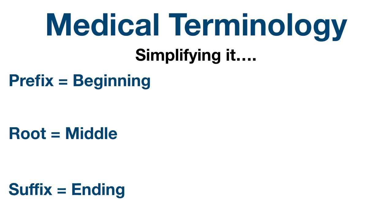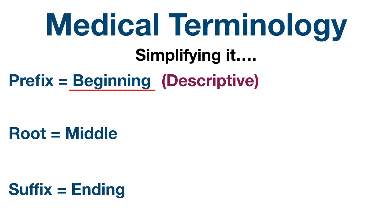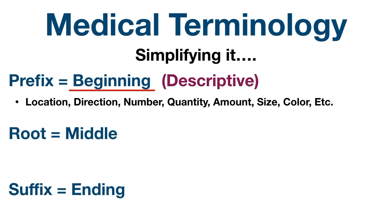The prefix is not always present, but when it is it forms the beginning of the word. The easy way to think of the prefix is it's generally the descriptive part of the medical term. It helps describe characteristics like a location, direction, number, quantity, amount, size, or color.